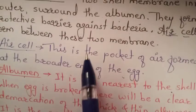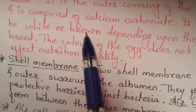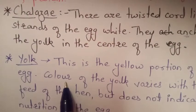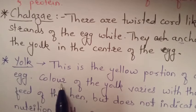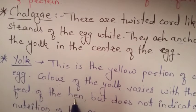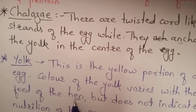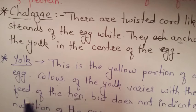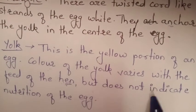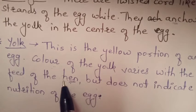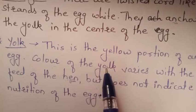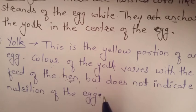The color of the yolk varies with the breed of the hen. The egg may be white or brown depending upon the egg breed. It contains the same nutrients in both breeds.